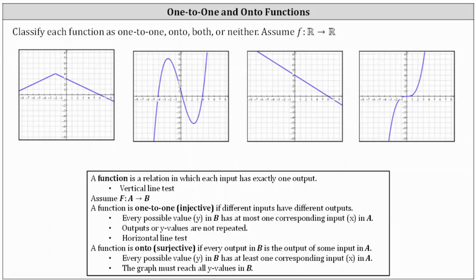We're asked to classify each function as one-to-one, onto, both, or neither. We will assume we have functions mapping from real numbers to real numbers. A function is a relation in which each input has exactly one output, and we are told these four graphs do represent functions.